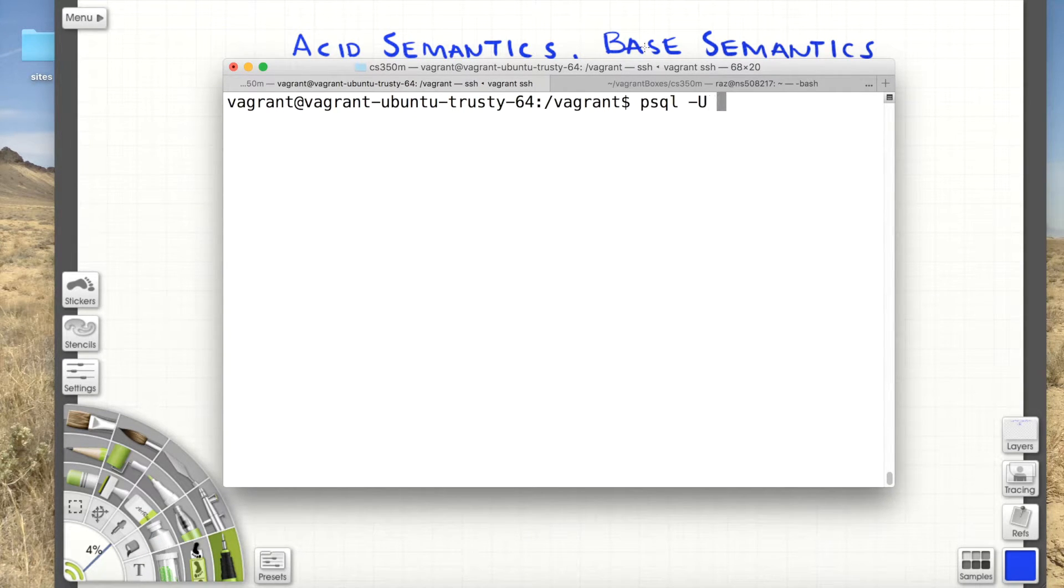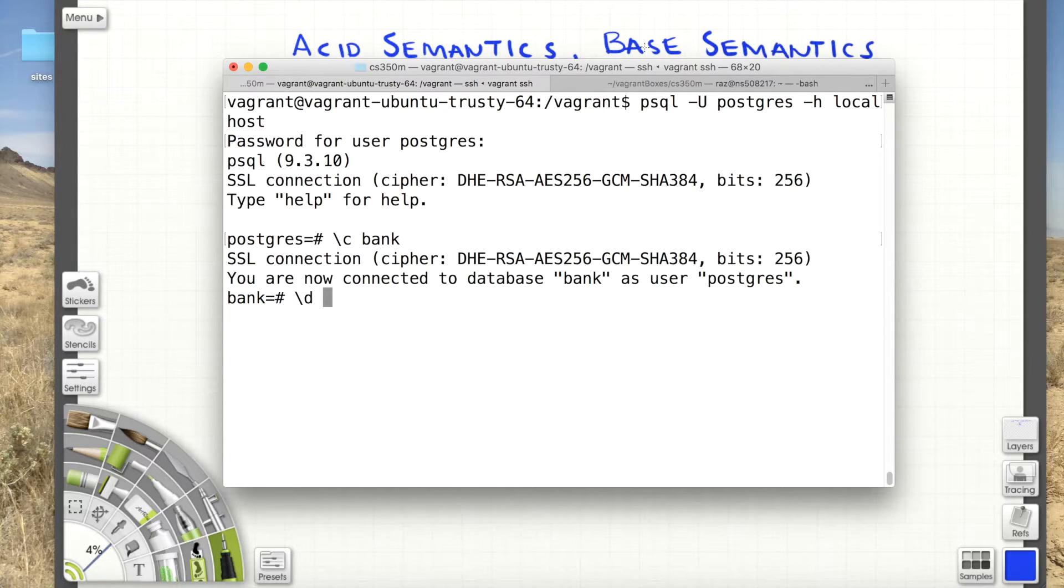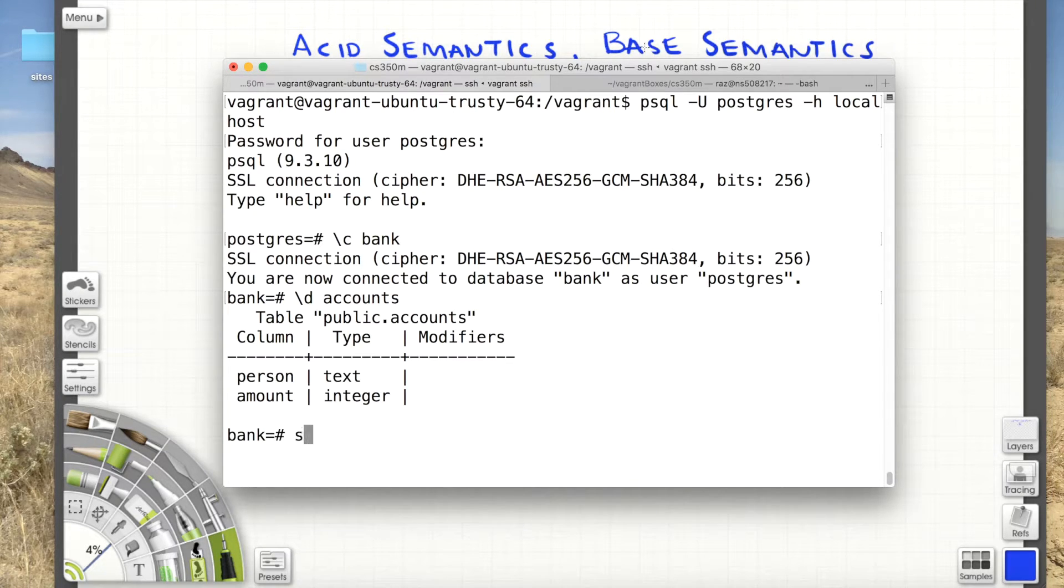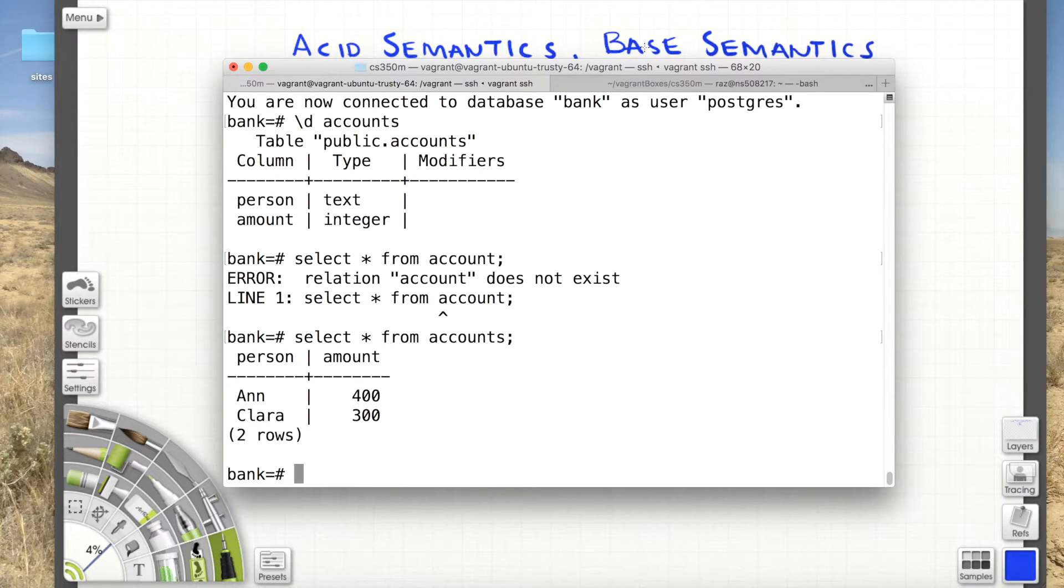So the same thing is true in Postgres or in any database server, where we want to be able to execute some set of statements atomically, meaning that either they're all going to work, or if one of them doesn't work, we'll roll back all those changes as if none of them happened. This is called transactions, database transactions. And we've already been doing this. So let me just show you that. And I already have a database called bank. I have one table called accounts that has a person and an amount. So Ann has $400, Clara has $300.